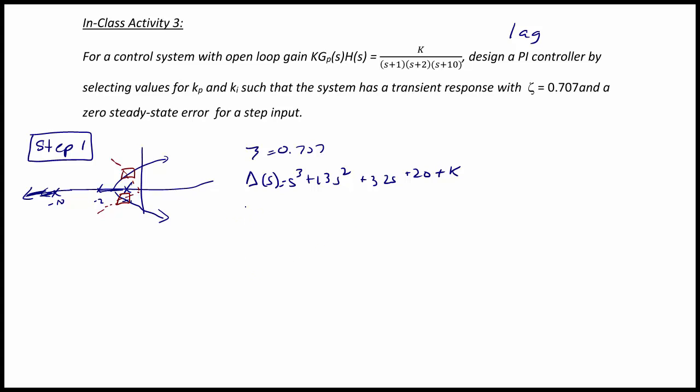Our desired Δ(s) is (s+a)(s+p+jp)(s+p-jp). That's because we know ζ = 0.707, which means the angle is 45 degrees, so the real and imaginary part of the pole has to be the same.